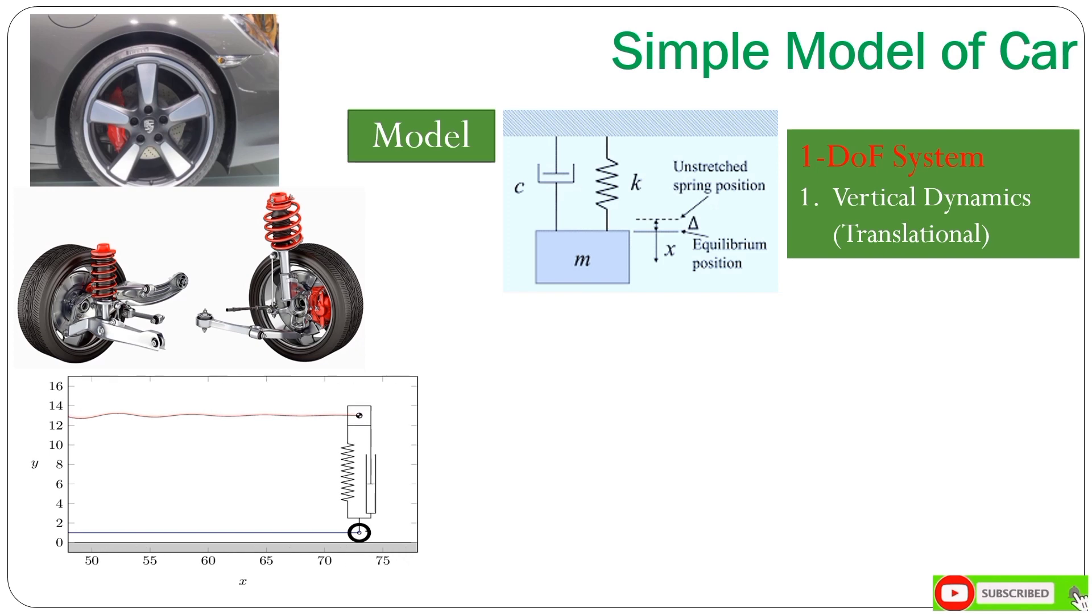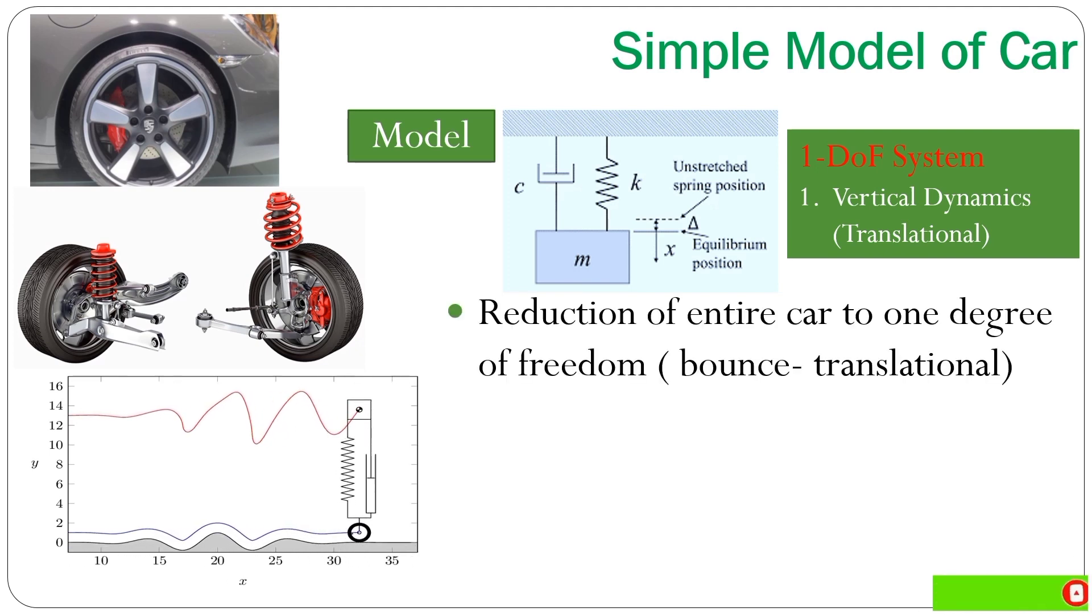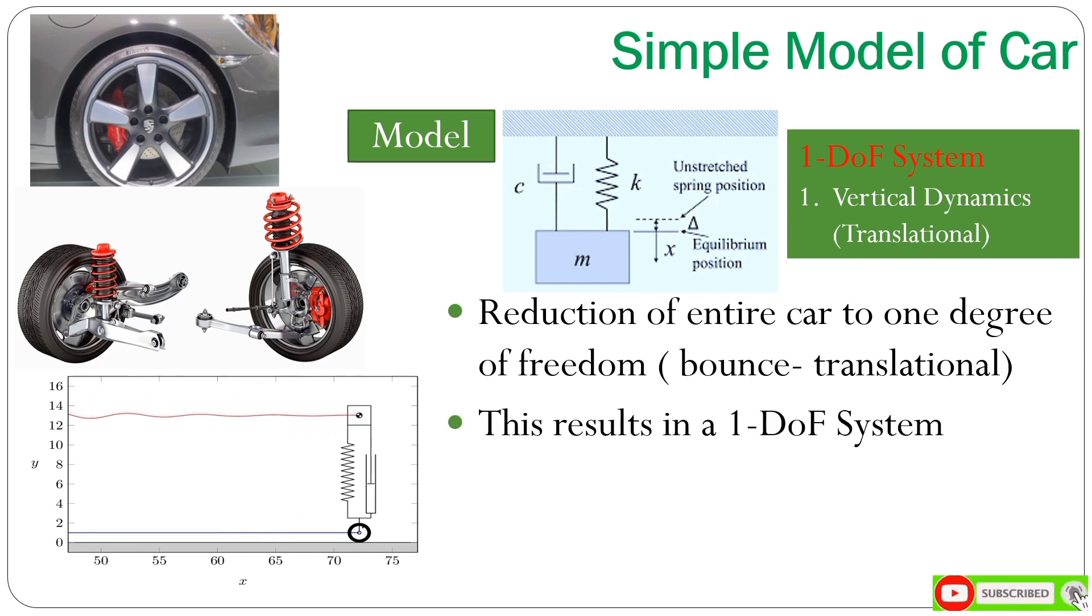And what we see there is a system with just a mass, a spring and a damper. Now, this is the reduction of the entire car to one translational degree of freedom, which means that we can look at the vertical bounce of the system. This results in a one degree of freedom system. The simulation results that we can get from this system are simple vertical dynamics.